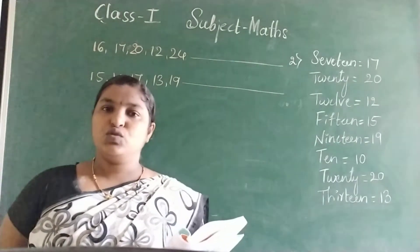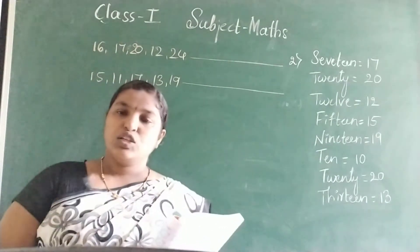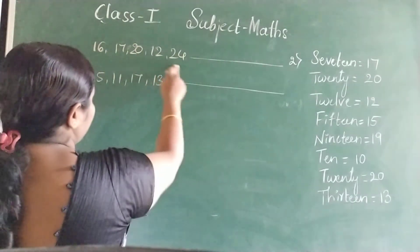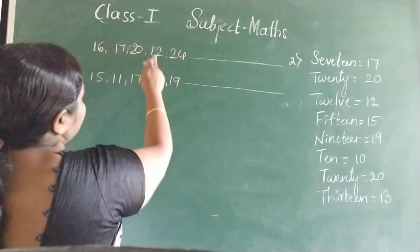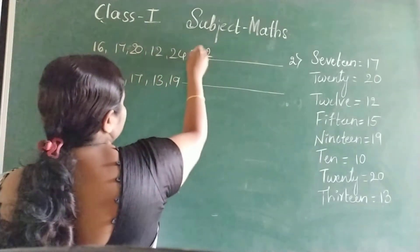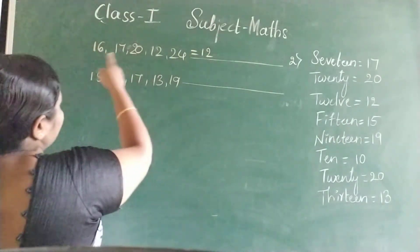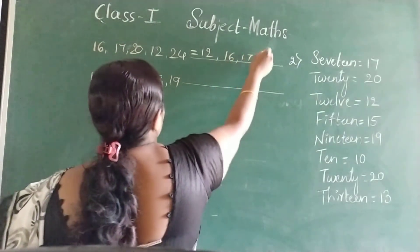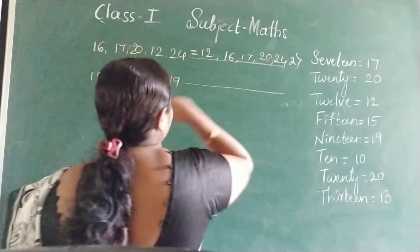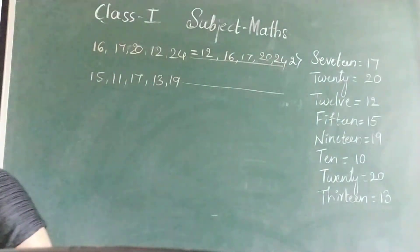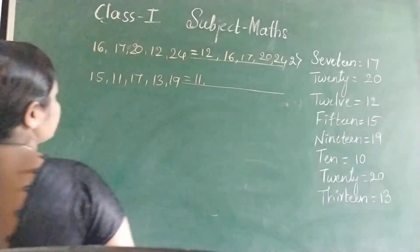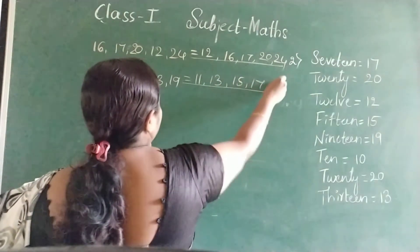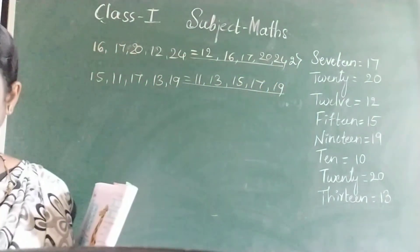We should write the numbers from the smallest to the biggest. To identify the big number and small number in this: 16, 17, 20, 12, 24. So 12 is the smallest number. After 12, 16. Then 17, then 20, 24. Now here we must identify the smallest number, that is 11. Then 13. Next 15, 17, 19. This is the ascending order. Ascending means writing numbers from small to big.